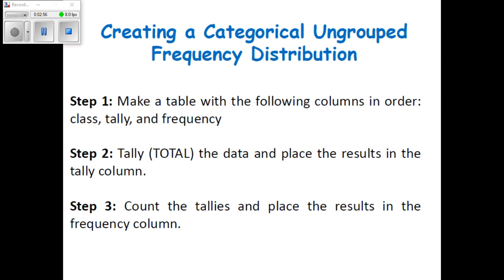Now, creating a categorical ungrouped frequency distribution. If you are going to create a Frequency Distribution with ungroup data, there are three steps. Step one: make a table with the following columns in order — class, tallies, and frequency. Step two: tally the data and place the result in the tally column.